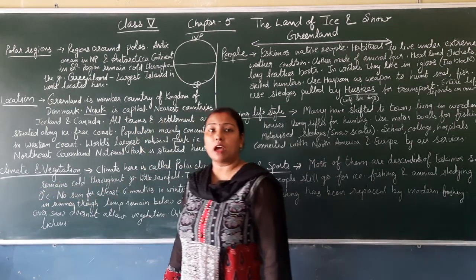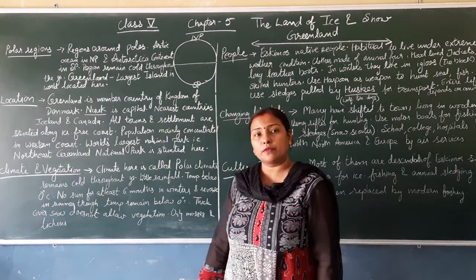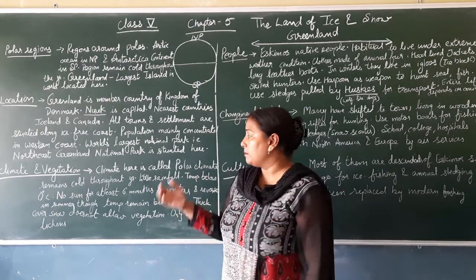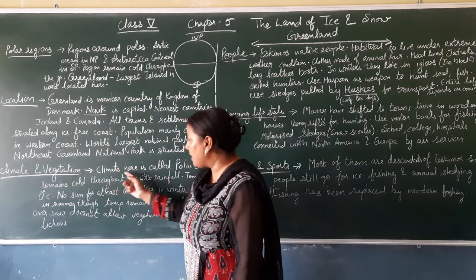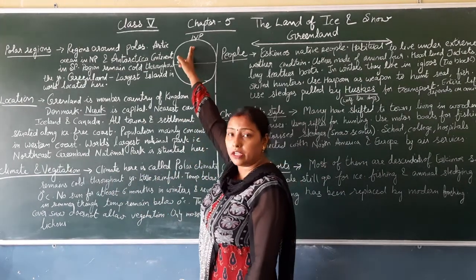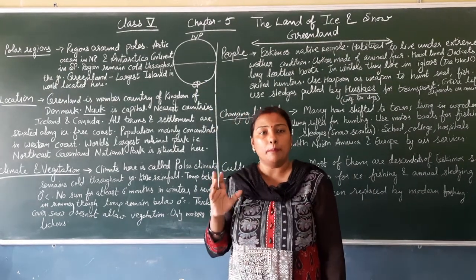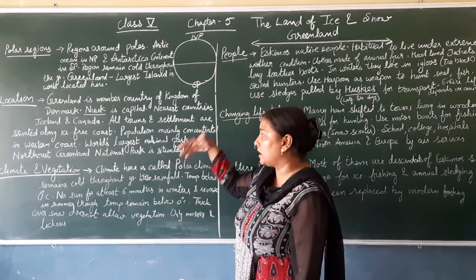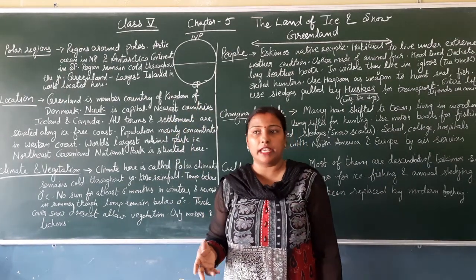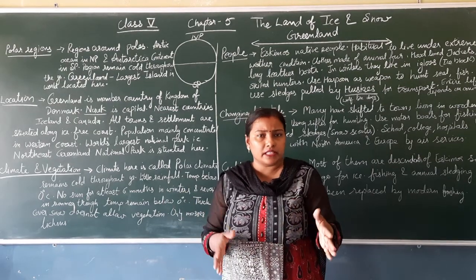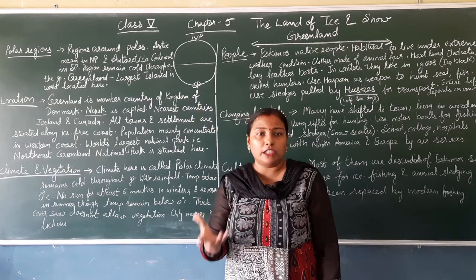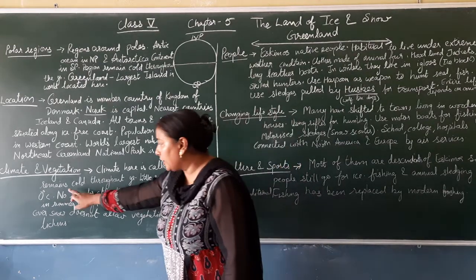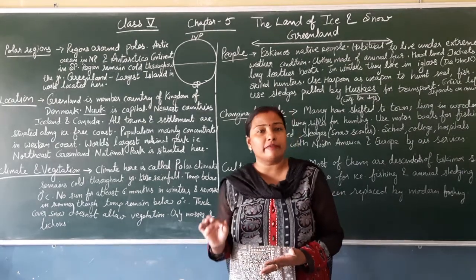Let us read about the climate and vegetation. Because Greenland is in the Northern Hemisphere in the polar region, there is always snow in polar regions throughout all 12 months, and the temperature is below zero degrees. So the climate here is called polar climate. In winter, temperatures drop to minus 20, minus 30, even minus 40 to 50 degrees. There are very cold winds at 150–160 km per hour, and it remains cold throughout the year.